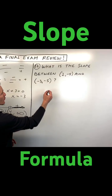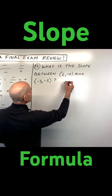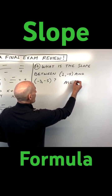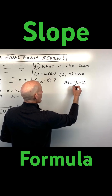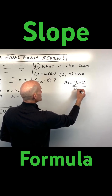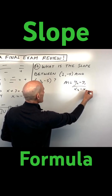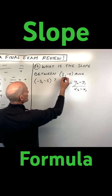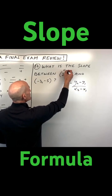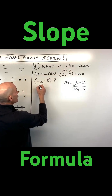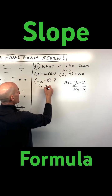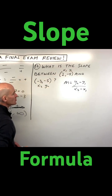You want to remember your slope formula, which is y2 minus y1 over x2 minus x1. You can think of this as point 1 being x1, y1 and point 2 being x2, y2.